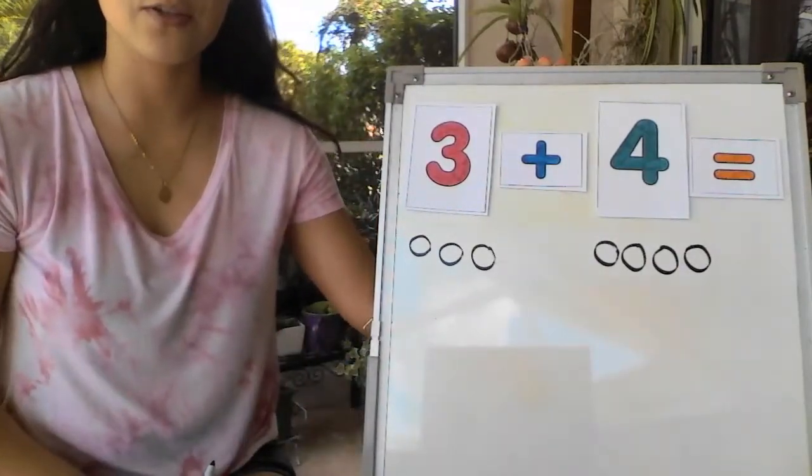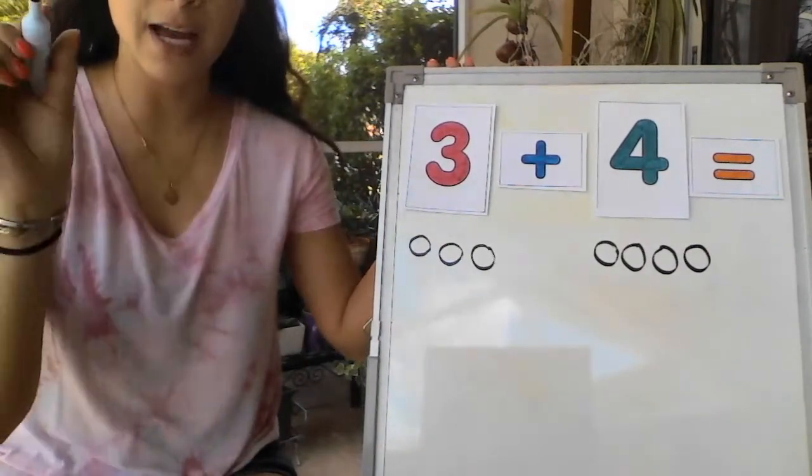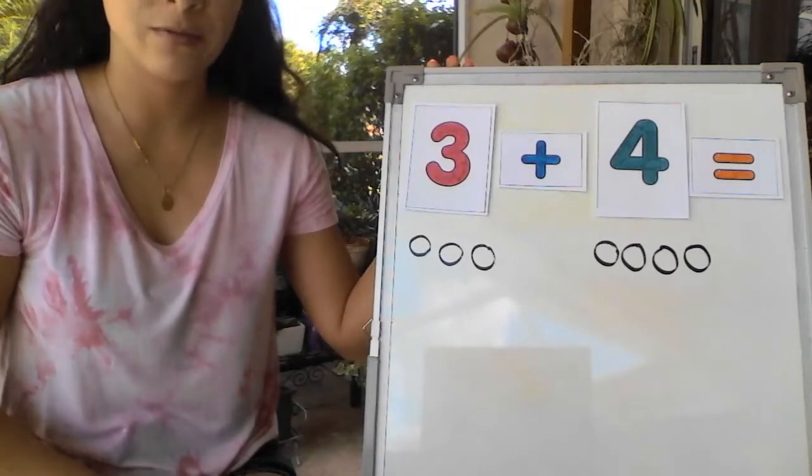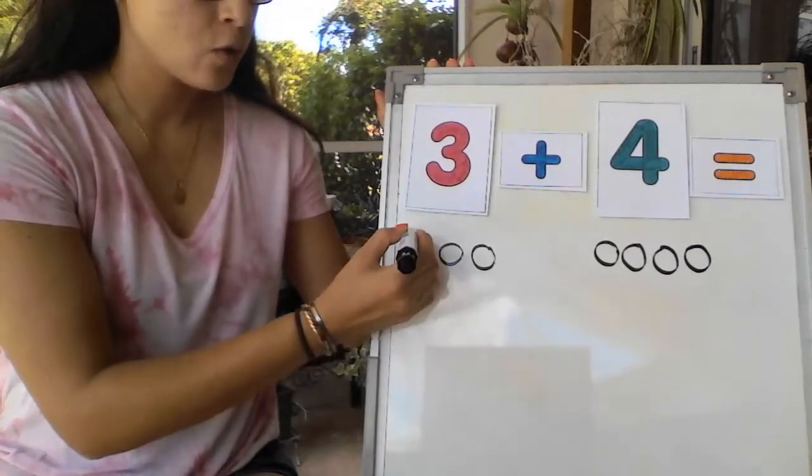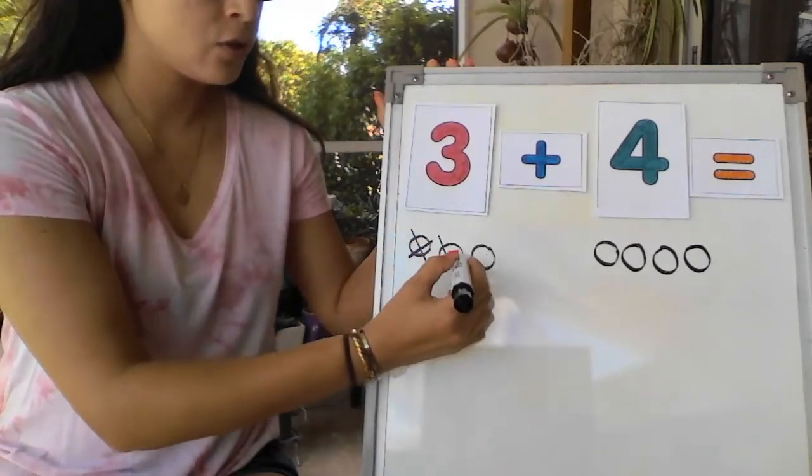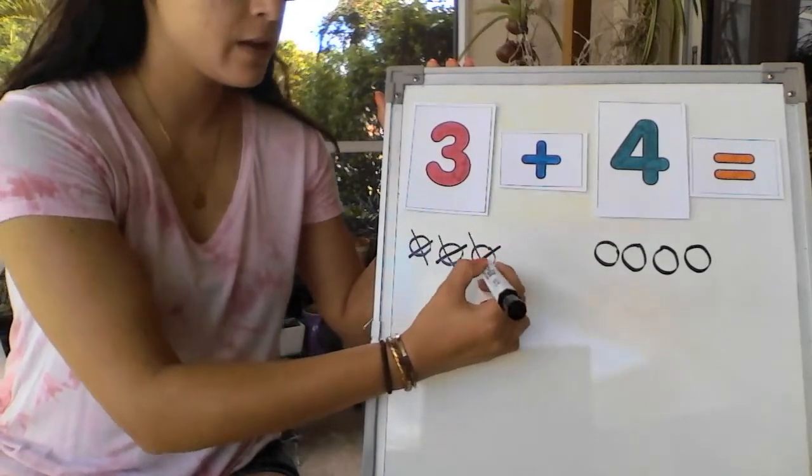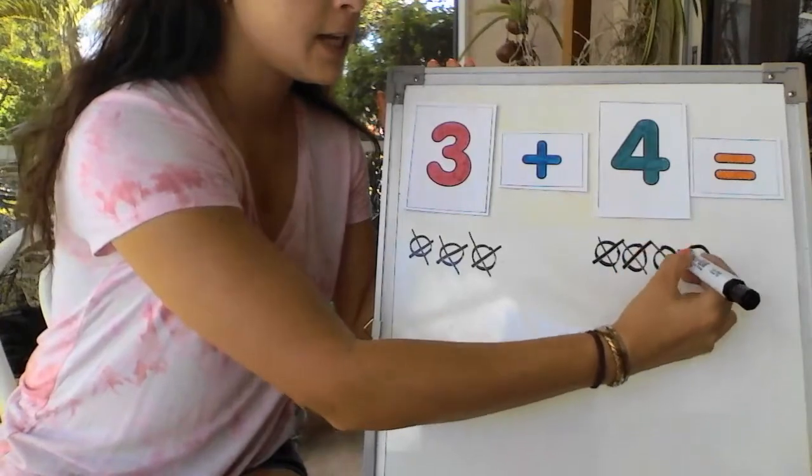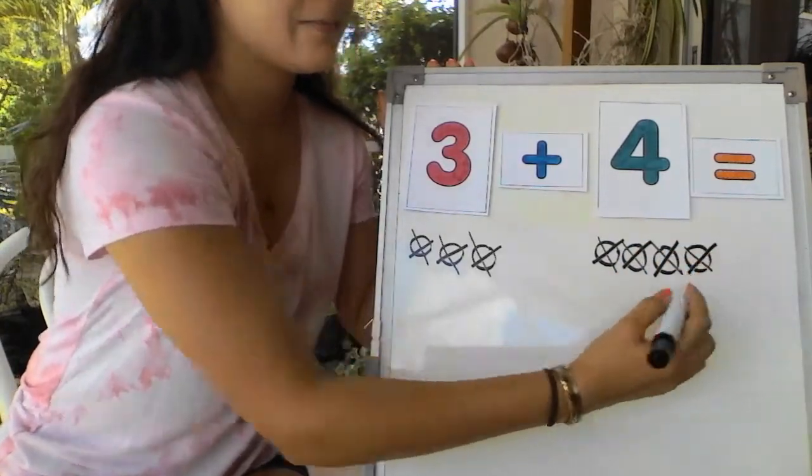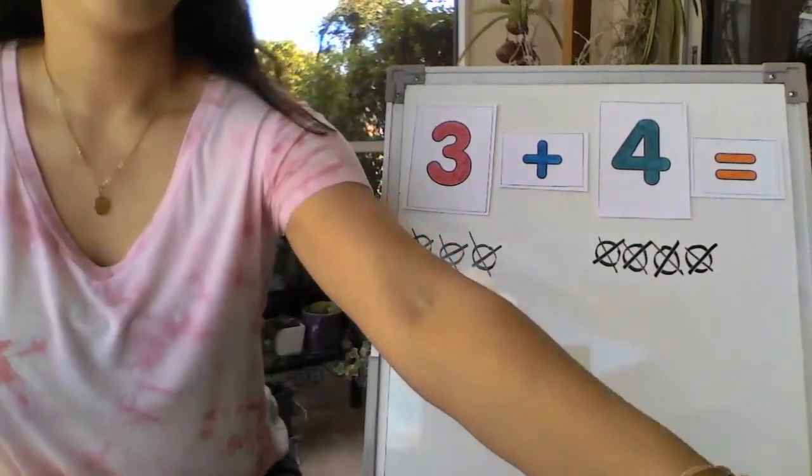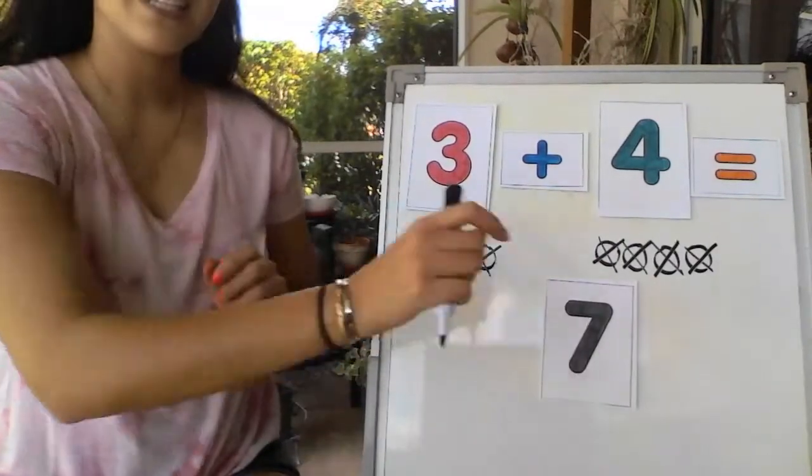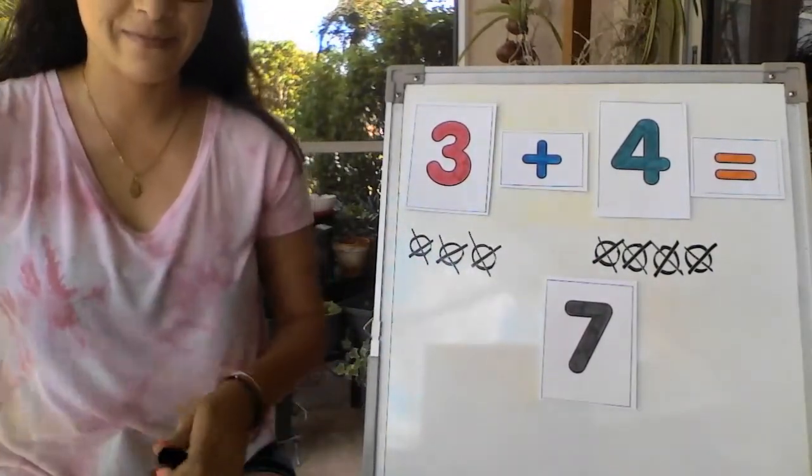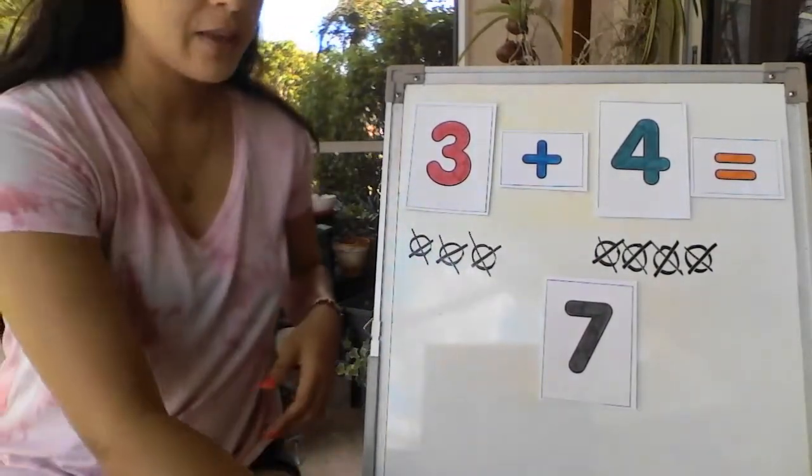Now let's count the circles together. Remember to cross out the circle that we count. Ready? 1, 2, 3, 4, 5, 6, 7. 3 plus 4 is still 7. Now we're going to use the manipulatives.